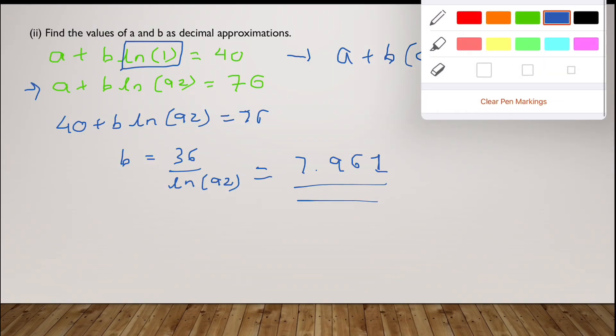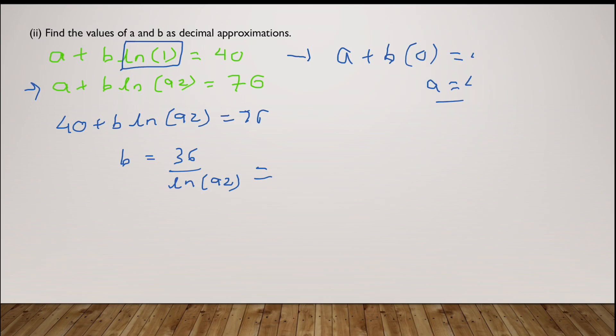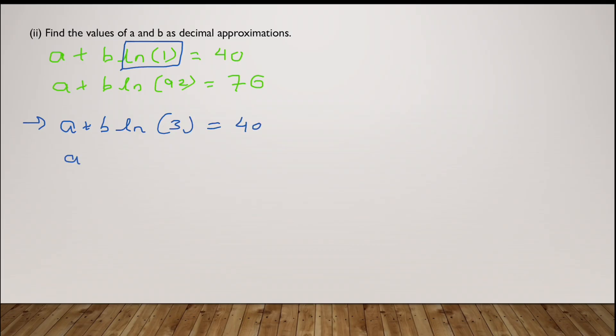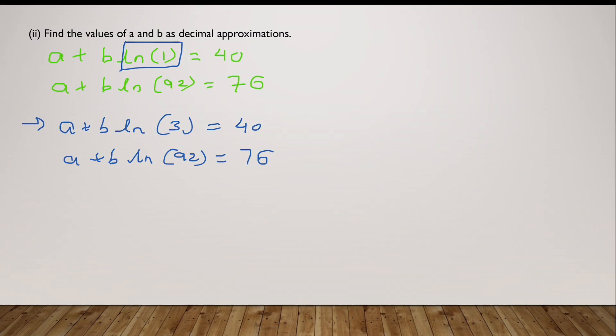But what if instead of ln of 1, I had two different sets of equations? If I had a plus b times ln(3) equals 40 and a plus b times ln(92) equals 76, what would you do in this case? Now feel free to pause the video and answer it yourself before I discuss it. I hope you're done. Now when you are given two equations in two variables, then there is a common method of solving them, which is called the method of elimination.